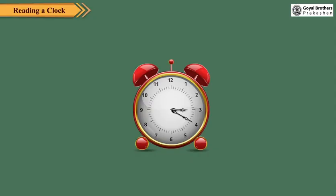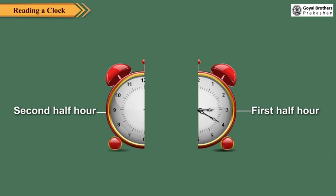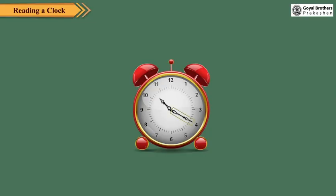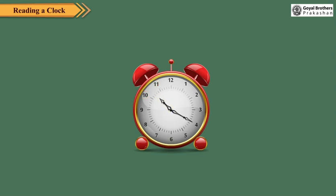Think of the dial of a clock as two halves. When the minute hand is in the 1st half hour, we use the word 'past'. In this clock, the minute hand is at 4, meaning 5 × 4 equals 20 minutes have passed. The hour hand is between 10 and 11 and the minute hand is in the 1st half hour. So we write the time as 20 minutes past 10 or 10.20.